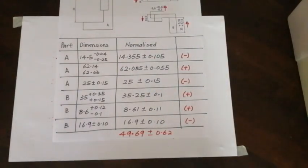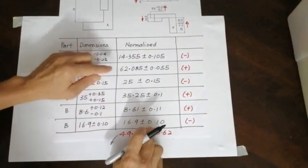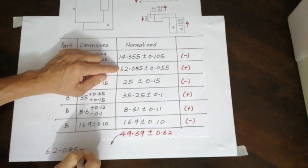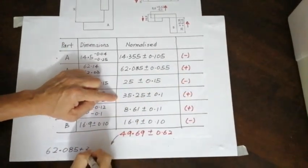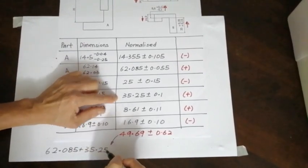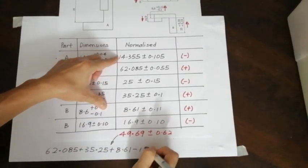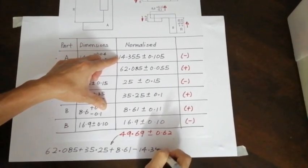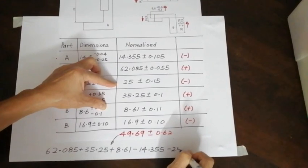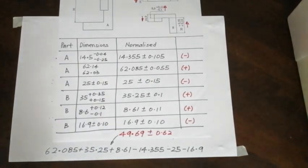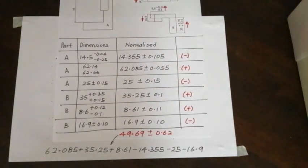Once again, I just want to mention how I get 49.69. This number, how do I get this number? It will be 62.085 plus this one, 35.25 plus 8.61. Subtract 14.355. Subtract 25. And finally, subtract 16.9. And this is where I hope you can grab the concept. And this is the last part for eLecture 3.